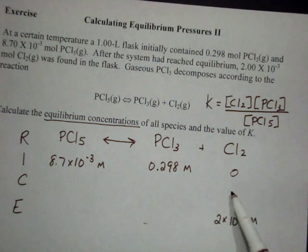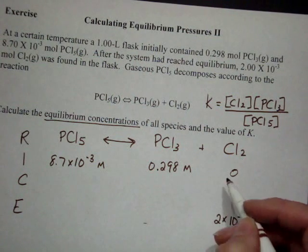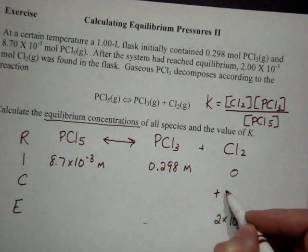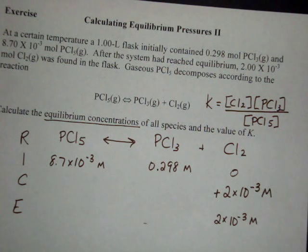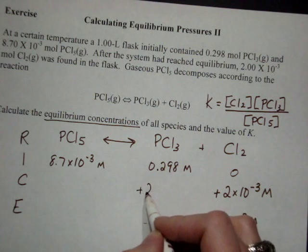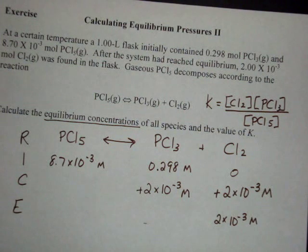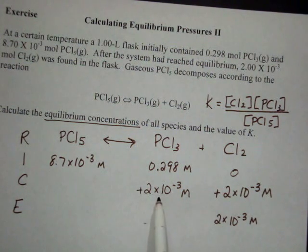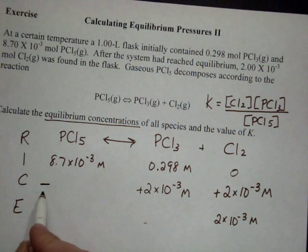So the change that occurs here for Cl2 from 0 to 2 times 10 to the negative 3 is plus 2 times 10 to the negative 3. If that much chlorine was made, we had to have also made that same amount of PCl3. And if that amount of PCl3 and Cl2 were created, it had to have come from the PCl5.